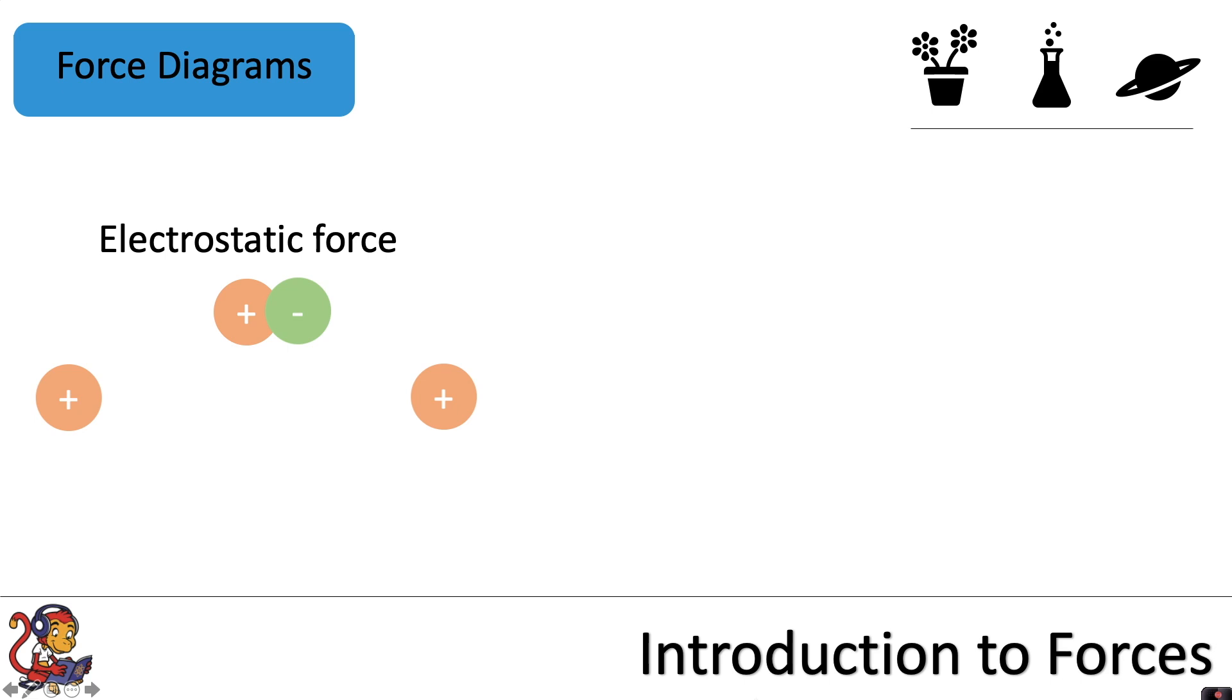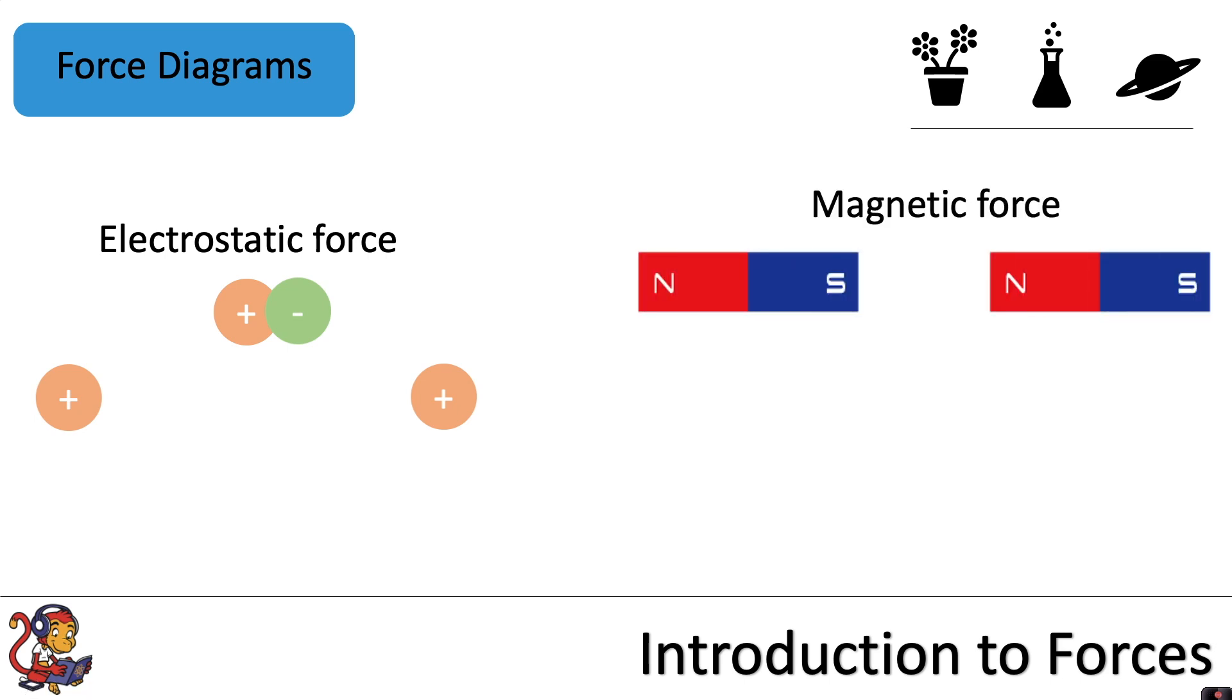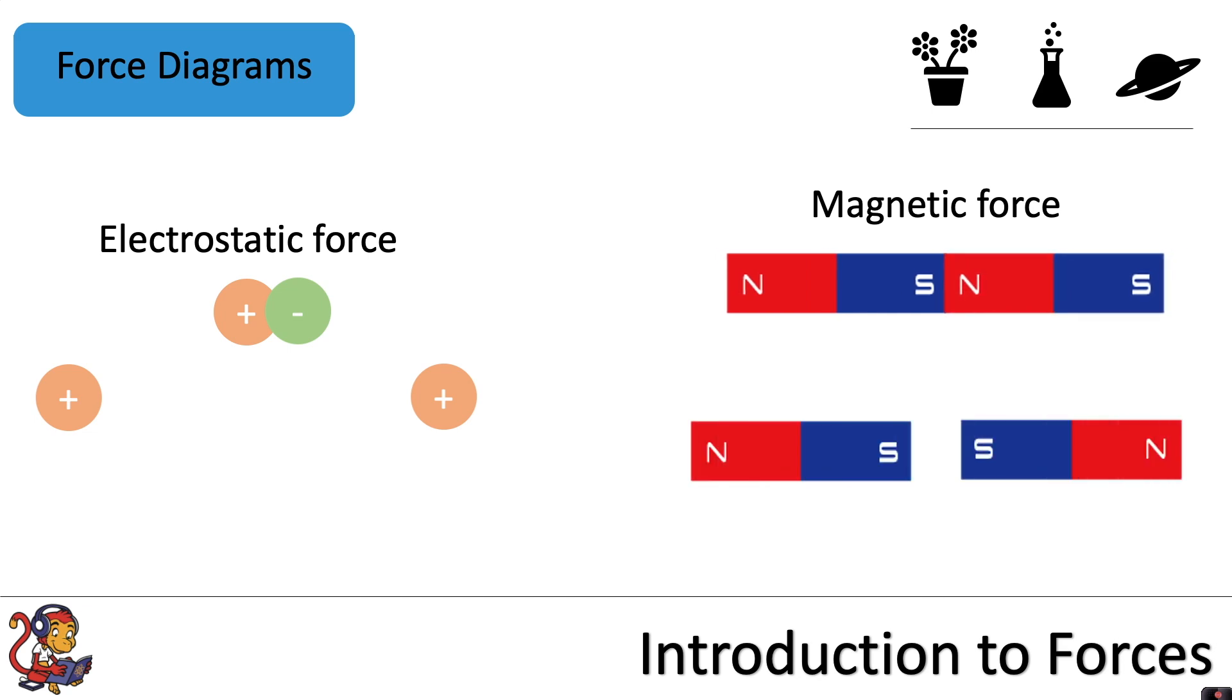And finally, with magnetic force, if we had two magnets here with opposite poles, they would be attracting to each other, shown by those force arrows. And if you had two like poles, the force arrows would show them repelling each other, like so.